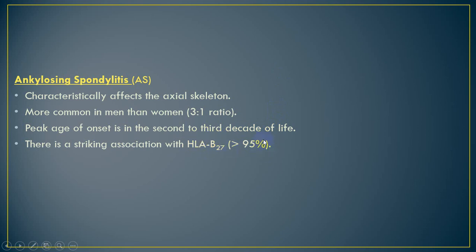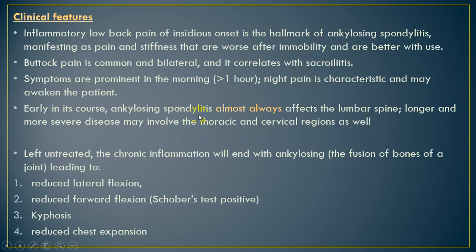HLA-B27 positivity has high positive predictive value, but a negative result does not exclude ankylosing spondylitis. When we suspect ankylosing spondylitis — usually inflammatory back pain in a young male — it is highly likely to be ankylosing spondylitis.